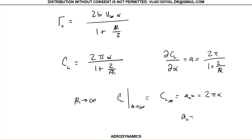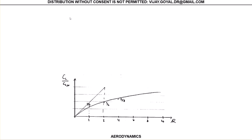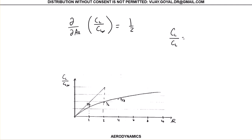So your a sub zero equals 2 pi. As the aspect ratio goes to infinity, this denominator term vanishes. Your CL at aspect ratio equal to infinity gives you a sub zero equal to 2 pi, so CL equals 2 pi times alpha. For a high aspect ratio, you can take the partial of the aspect ratio of CL divided by CL_infinity, and that's going to give you one half. I just took the derivative with respect to this — that's the behavior of this type of structure.